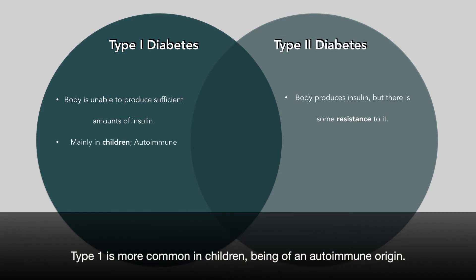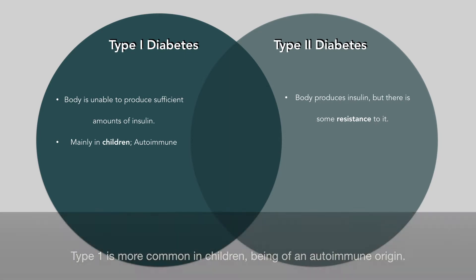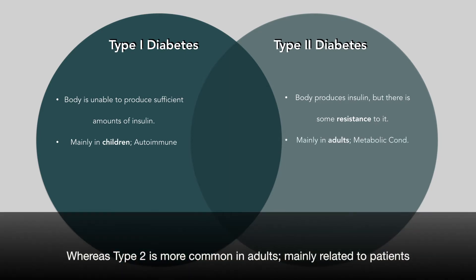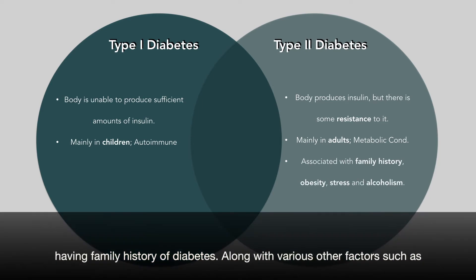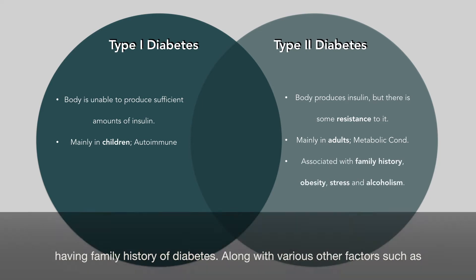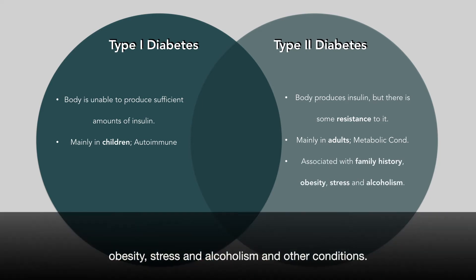Type 1 is more common in children, mainly being of autoimmune origin, whereas type 2 is more common in adults, mainly related to patients having a family history of diabetes along with various other factors such as obesity, stress, alcoholism, and other conditions predisposing to diabetes.